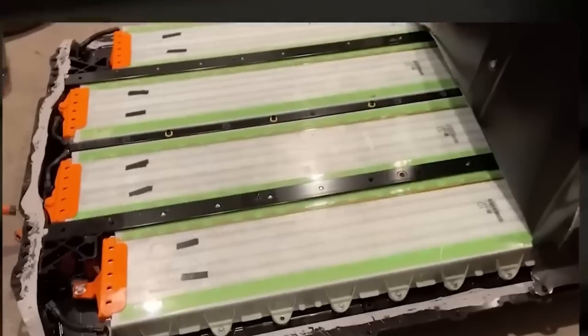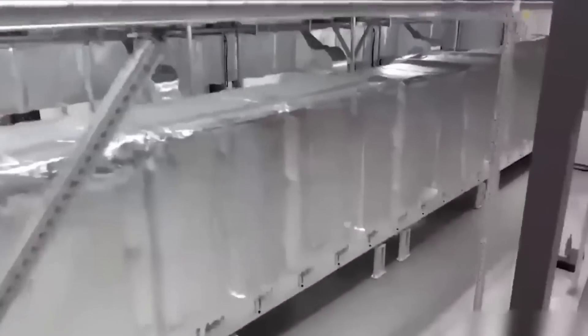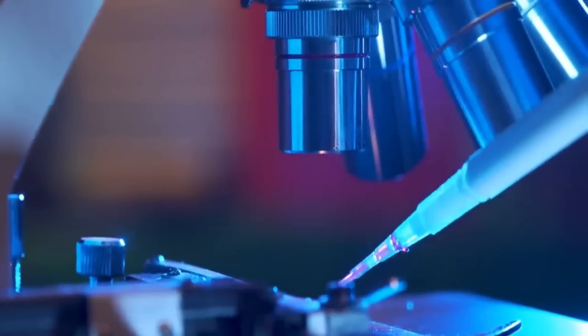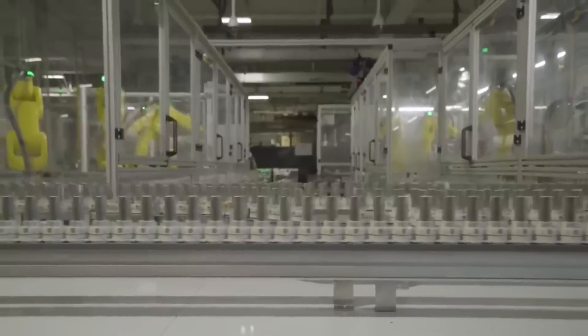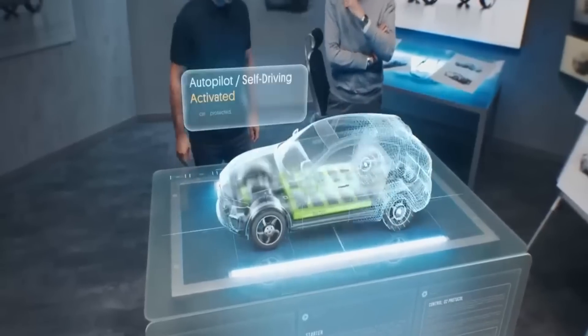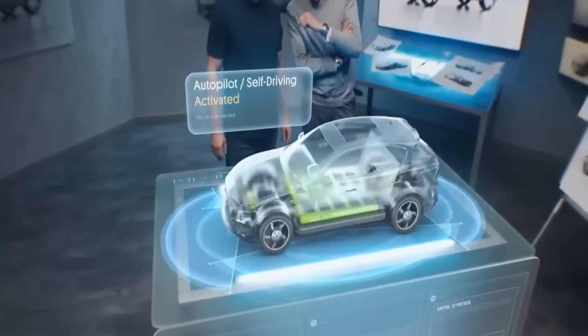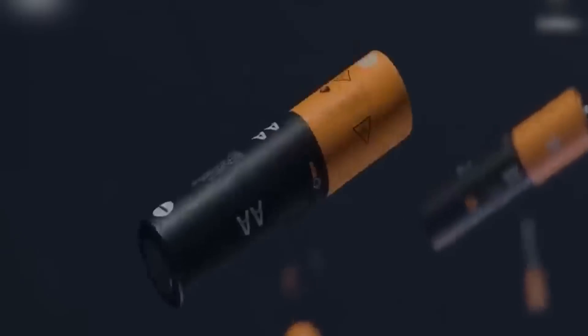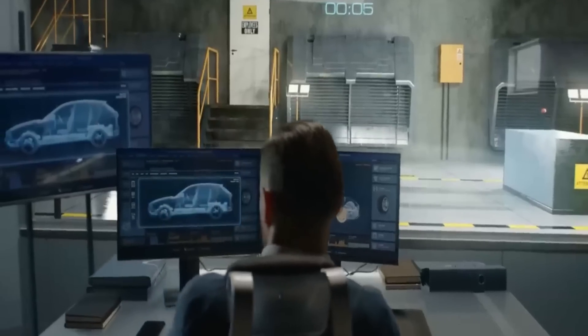In the pursuit of alternatives to replace lithium-ion batteries, sodium-ion batteries emerge as a potential contender. Sodium-ion batteries are a form of secondary battery with operating principles remarkably similar to lithium-ion batteries. During the charging process, sodium ions are extracted from the cathode material and inserted into the anode material via the electrolyte. Conversely, during discharging, electrons are transferred from the anode to the external circuit to maintain charge balance.